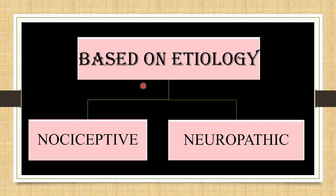The next classification is based on etiology. Pain is classified into nociceptive pain and neuropathic pain. Nociceptive pain is further classified into somatic pain and visceral pain. Somatic pain arises from the musculoskeletal system and is usually an aching, dull, throbbing, or sore type of pain that is localized. Visceral pain arises from visceral organs such as the gastrointestinal tract or pancreas, presenting as gnawing, squeezing, and cramping pain that can be diffuse and is often referred to distant sites.